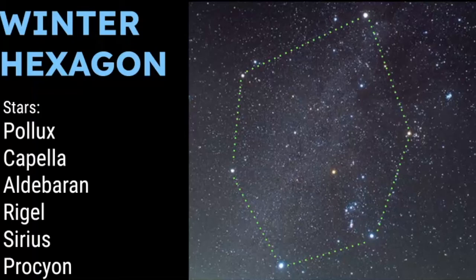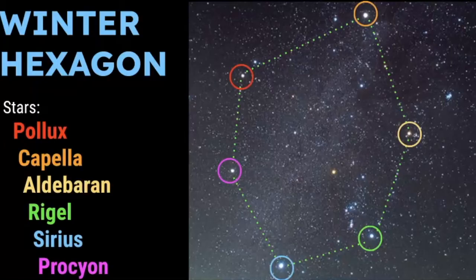So here are the main stars that are a part of the winter hexagon. And if we were to point those out, here is where Capella is. And then it connects with Aldebaran, Rigel, Sirius, Procyon, and Pollux of Gemini.